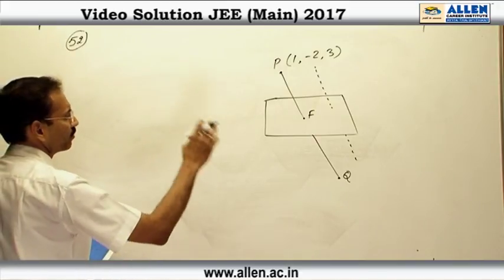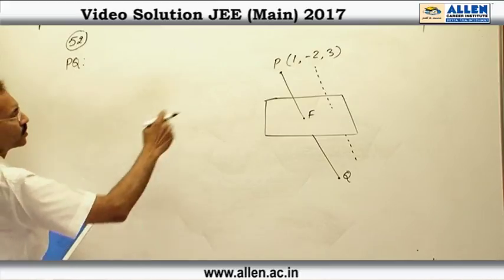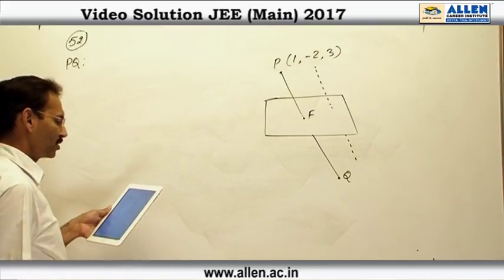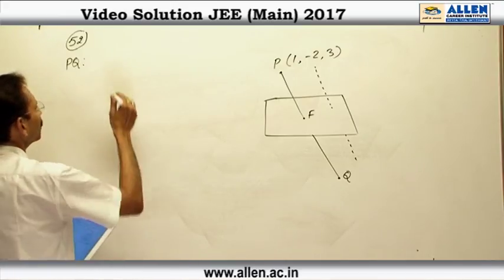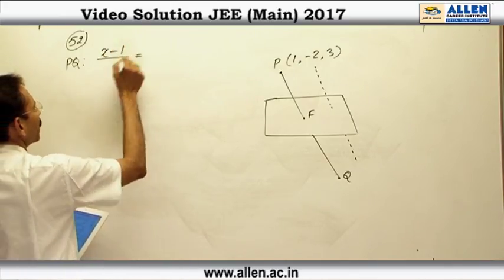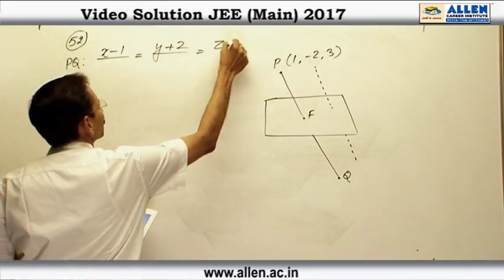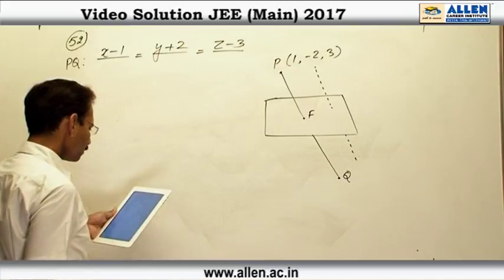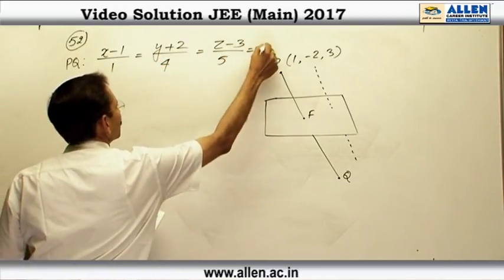For finding F, I am writing the equation of line PQ. PQ is parallel to the dotted line and the direction ratios of the dotted line are given as 1, 4, 5. So the line PQ will be x minus 1, y plus 2, z minus 3 divided by 1, 4, 5. Let us say this is equal to lambda.